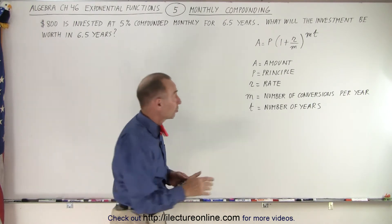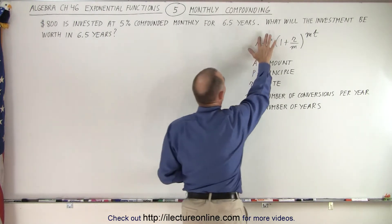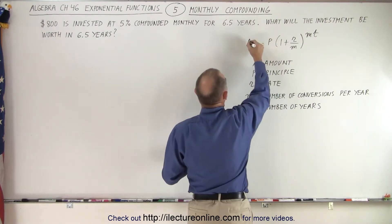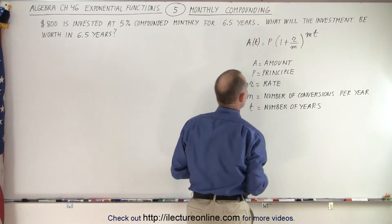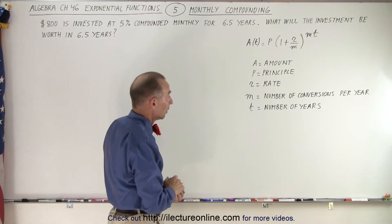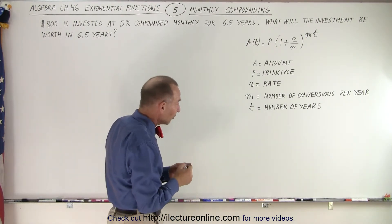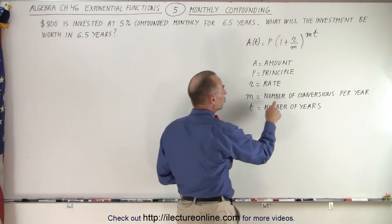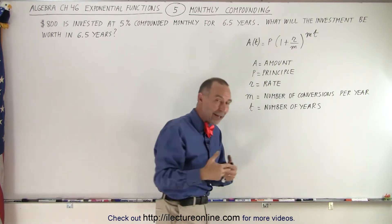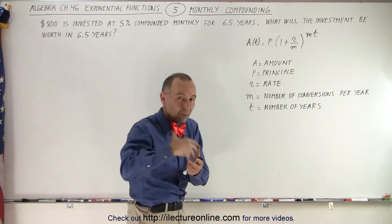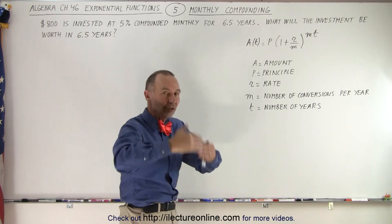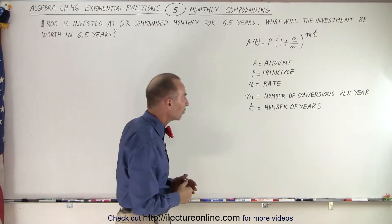Remember, A is a function of t, and we can write it like that as well — A is a function of the time, how long we have it invested for. Notice that m is what we call the number of conversions per year: the number of times that the interest is compounded, added to the investment, so that you keep earning interest on interest.